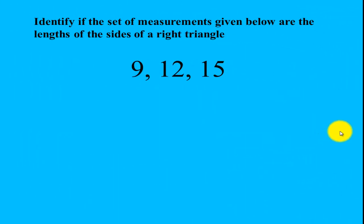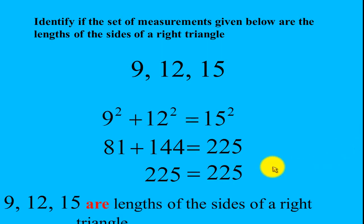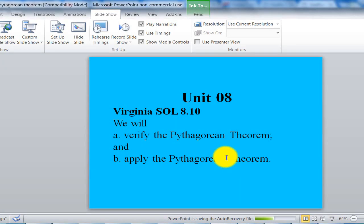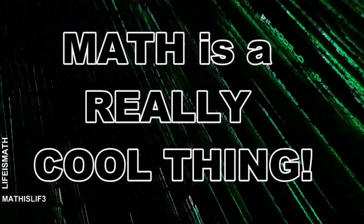Alright, for the next example, I need you to pause the video and solve this given problem. The answer you should get is yes — 9, 12, and 15 should be Pythagorean triples, meaning these lengths will be sides of a right triangle. Alright, that's for the first part of our unit 8. Go ahead and watch the next video. Math is a wonderful thing. Math is a really cool thing.